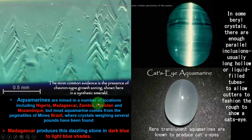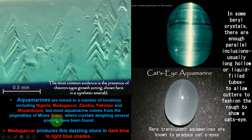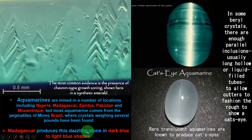Aquamarines are mined in a number of locations: Nigeria, Madagascar, Zambia, Pakistan, and Mozambique. But most aquamarines come from the pegmatites of mines in Brazil, where crystals weighing several pounds have been found. Madagascar produces this dazzling stone in dark blue to light blue shades.